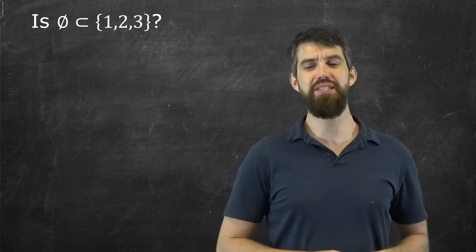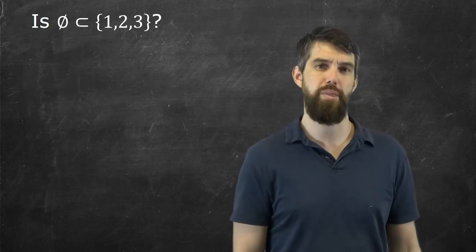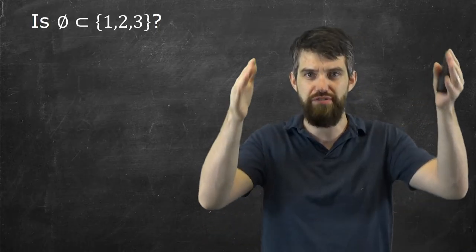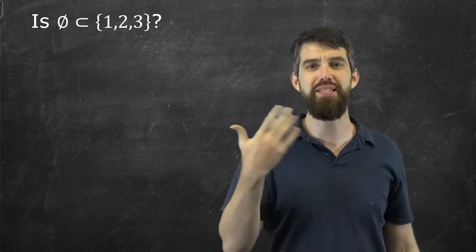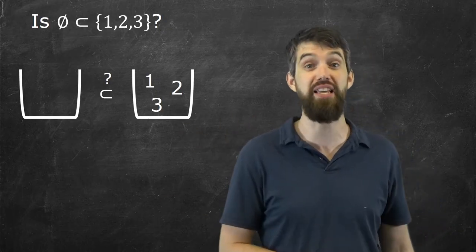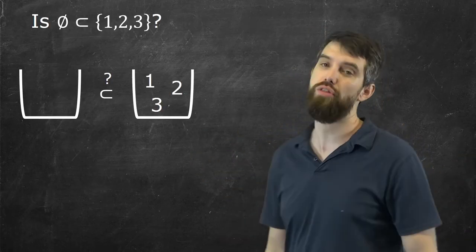What about this? Is the empty set a subset of the set {1, 2, 3}? Now, the set {1, 2, 3} we understand is just a box that's got three elements, 1, 2, 3 in it. We're asking is the empty set a subset of it. Maybe pictorially we'll represent it like this. We've got this one empty box, and we're asking is it a subset of this box that has three things in it.